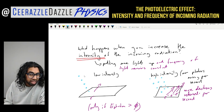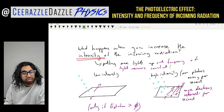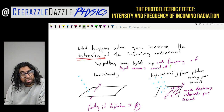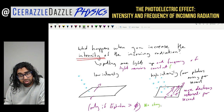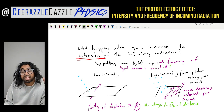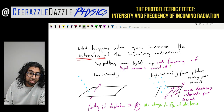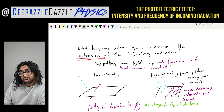What about the kinetic energy? If we increase the intensity, the energy of the photon remains constant because the frequency of the light remains constant. Therefore the kinetic energy of the electrons remains the same — there is no change to the kinetic energy E_k of the electrons. There are more electrons released per second, but they have the same kinetic energy as before.